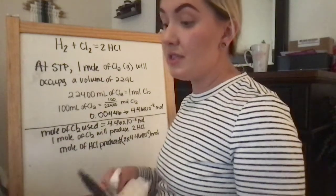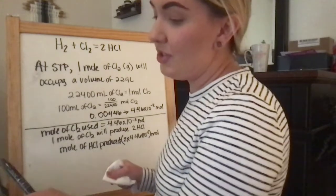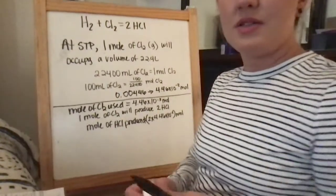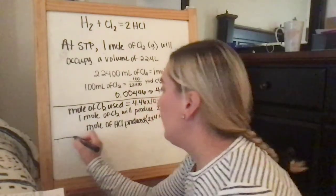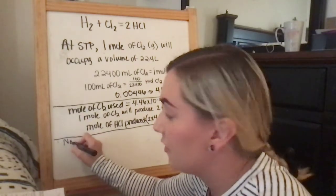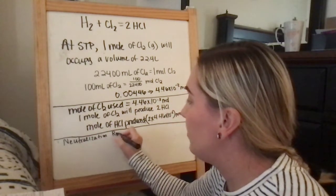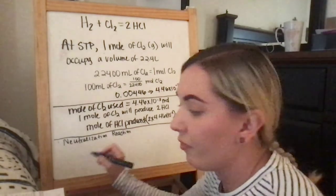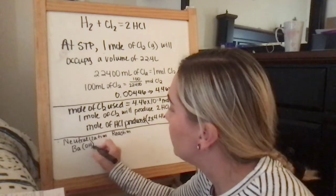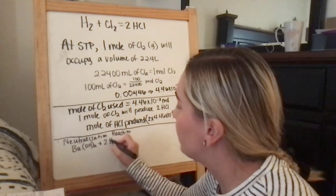Now we're going to move on to step 3, which is the neutralization reaction. The neutralization reaction is going to be Ba(OH)2 plus 2HCl.